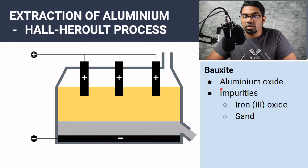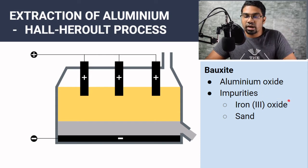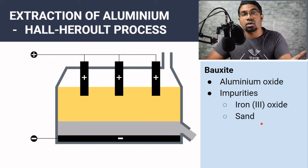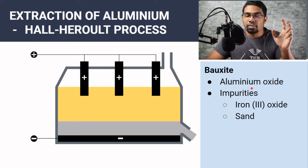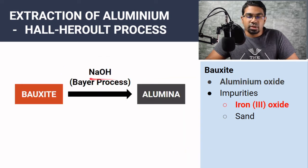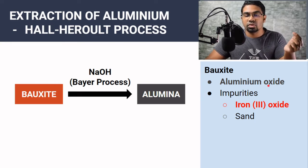Bauxite is the ore that contains aluminium oxide, but it also contains some impurities such as iron(III) oxide. Iron(III) oxide is an impurity because we are not trying to extract iron — we are trying to extract aluminium. It can form up to about 20 to 25% of bauxite. So when we see bauxite, it has a reddish colour because of the presence of iron(III) oxide. We also have lots of sand, as with all ores, because all ores are basically rocks that contain the metal oxide or metal compound we want to extract the metal from. First, we do a purification using sodium hydroxide, and this is known as the Bayer process. Bauxite is purified to alumina, which is simply purified aluminium oxide.